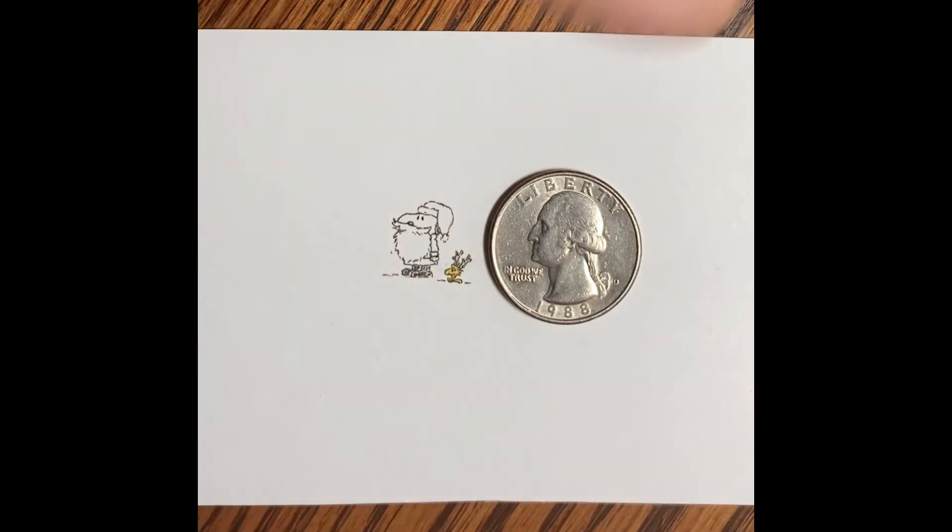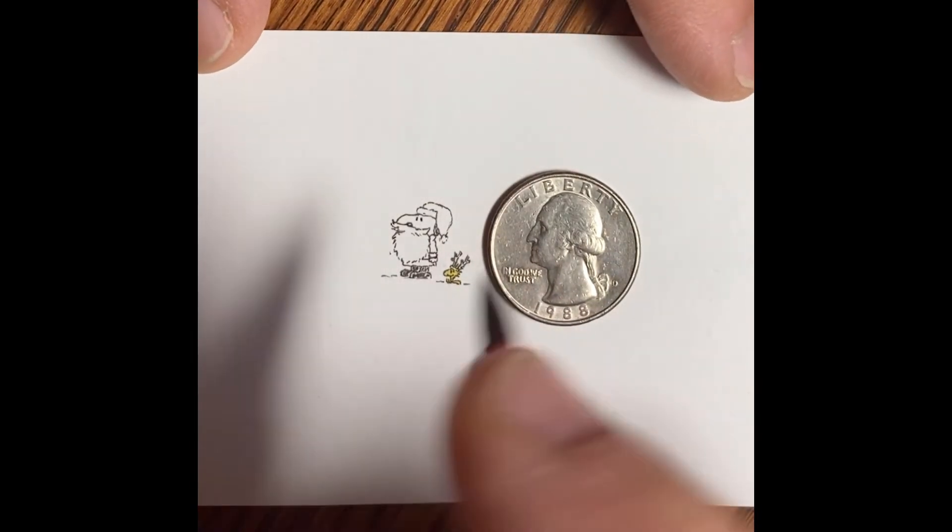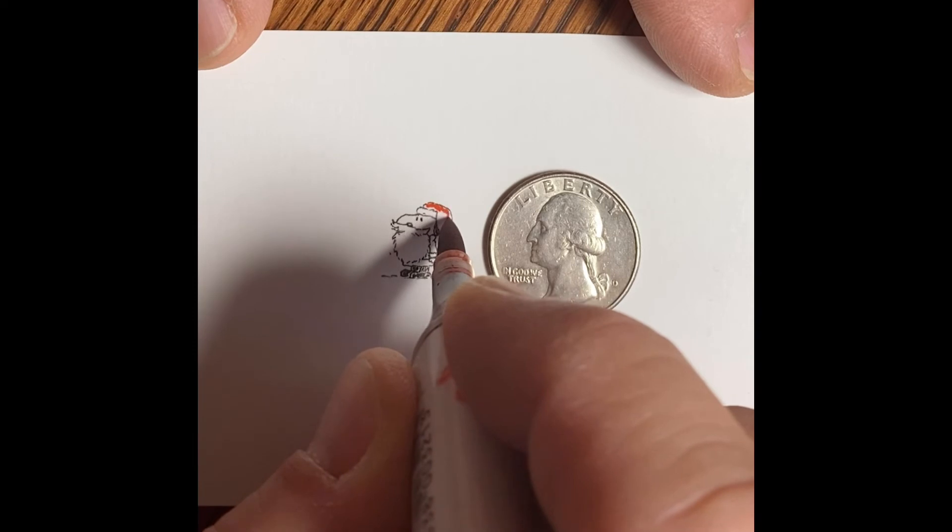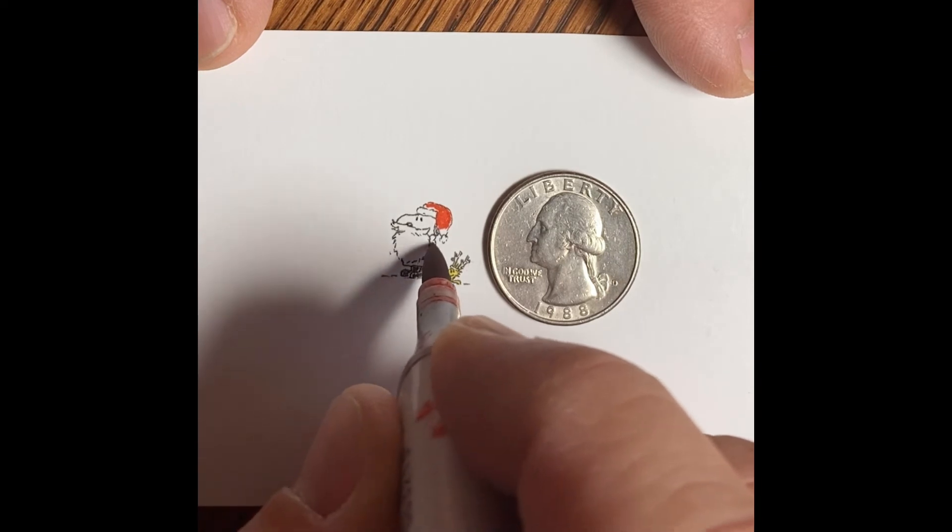Moving on to the red. There's not a lot of colors with this picture because it's just Snoopy and Woodstock. The red is vermilion. I'm working that fine tip right up to the black line. A lot of times I'll rotate the paper so I can get that fine tip right up to the black line.